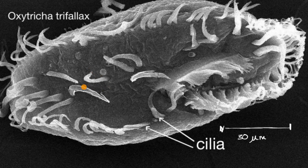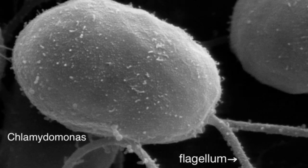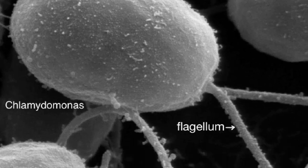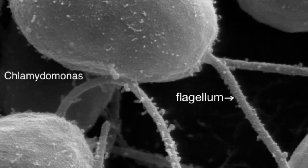Another related idea: instead of having many cilia, some unicellular organisms will just have one large tail-like structure that they can whip around to move. This right over here is a commonly studied green algae called Chlamydomonas. You can see very clearly the flagellum — this tail-like structure. It's extremely thin, seen here under a very powerful microscope.